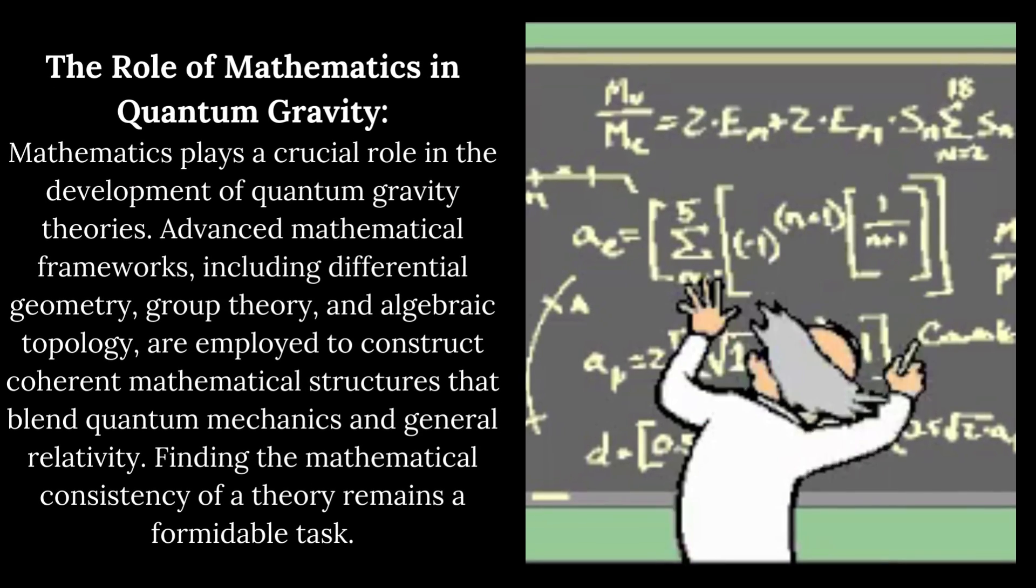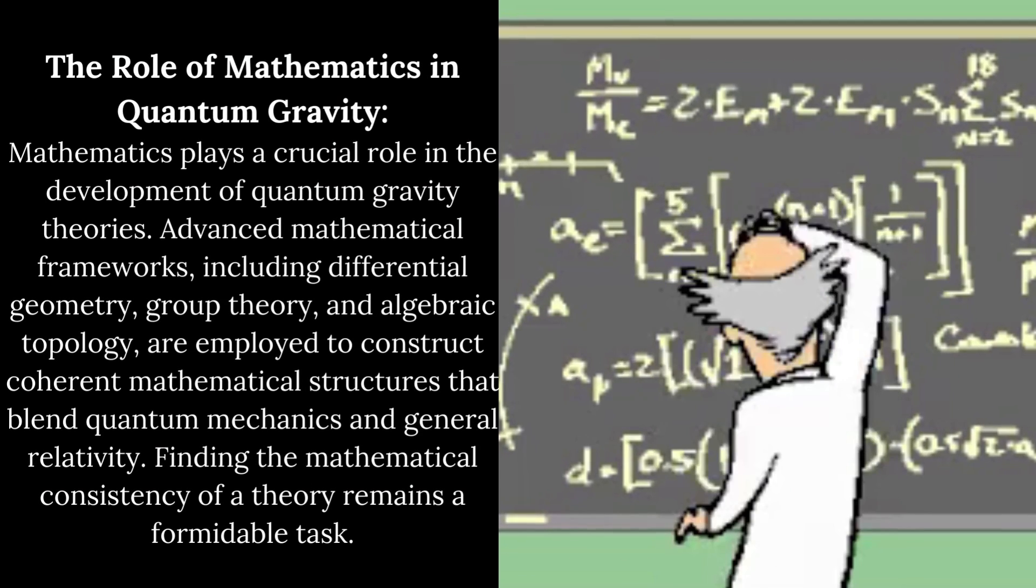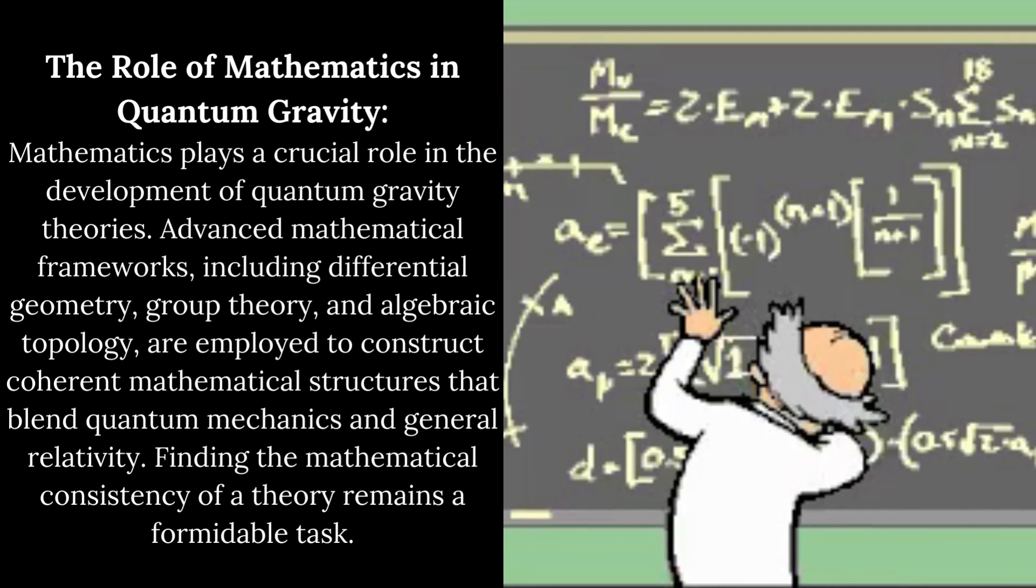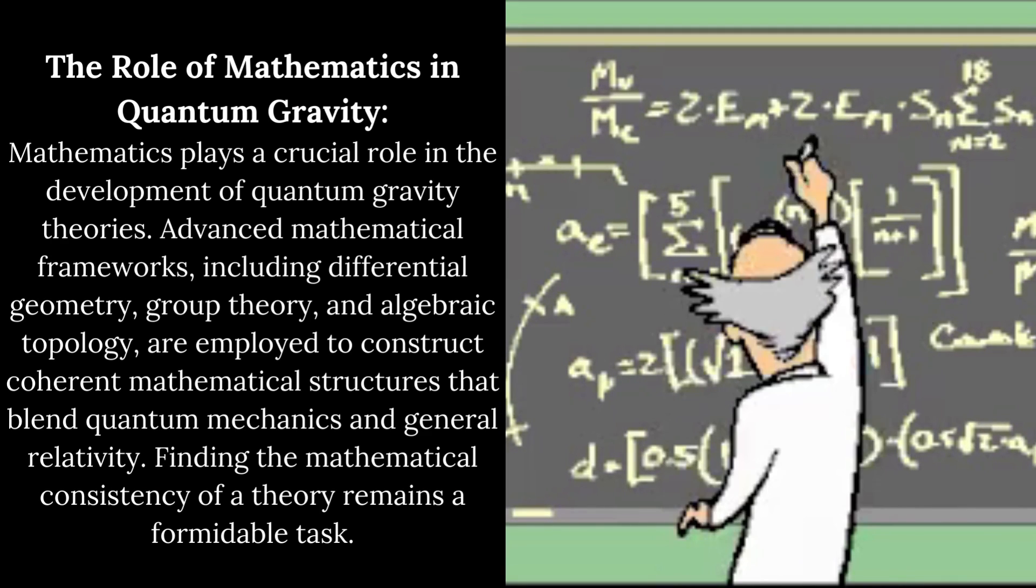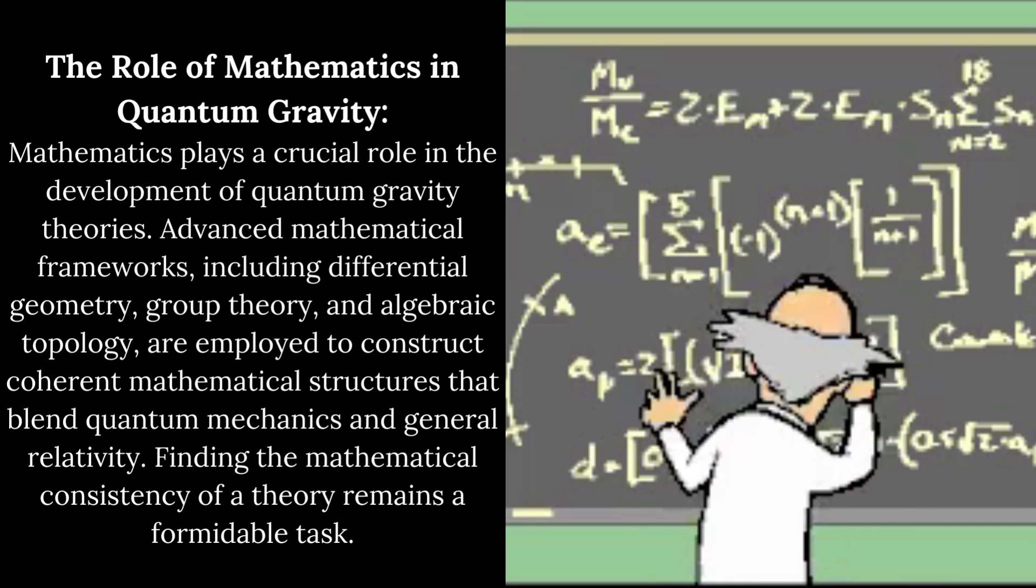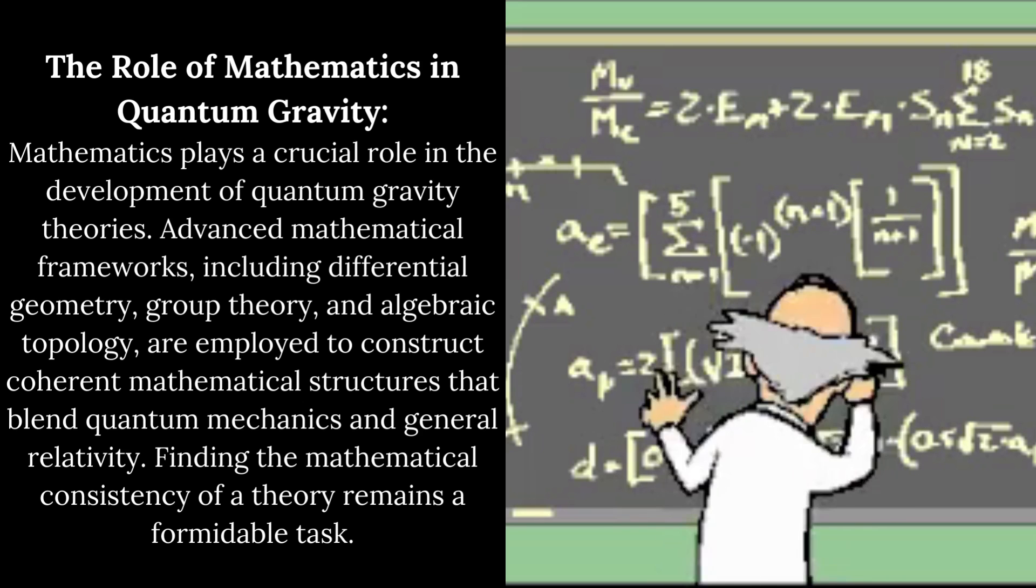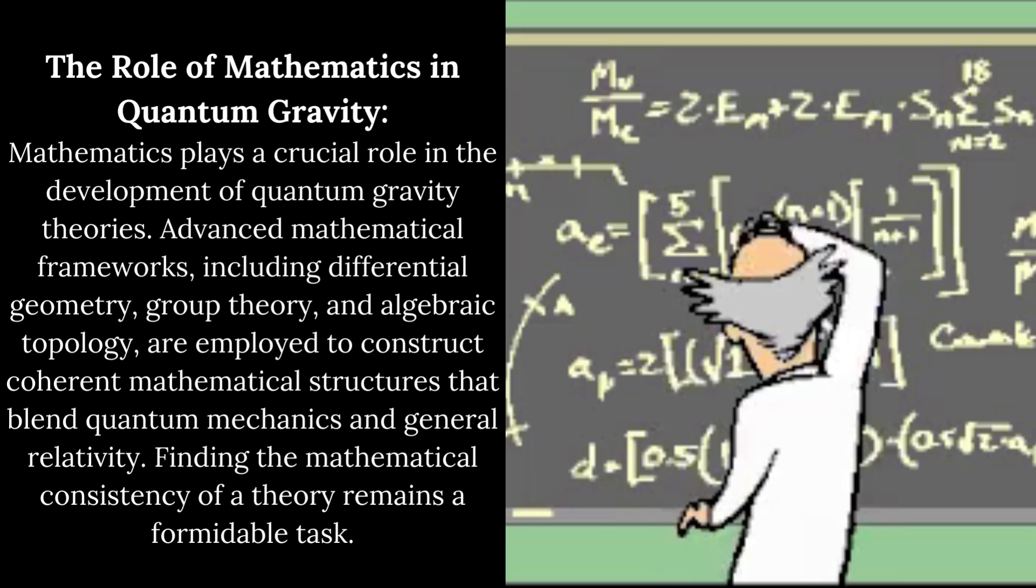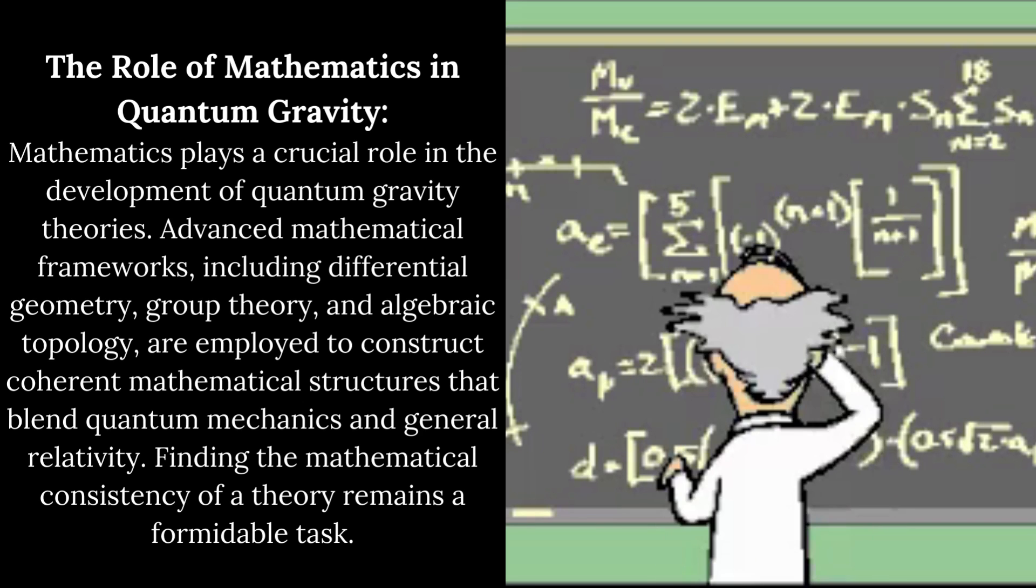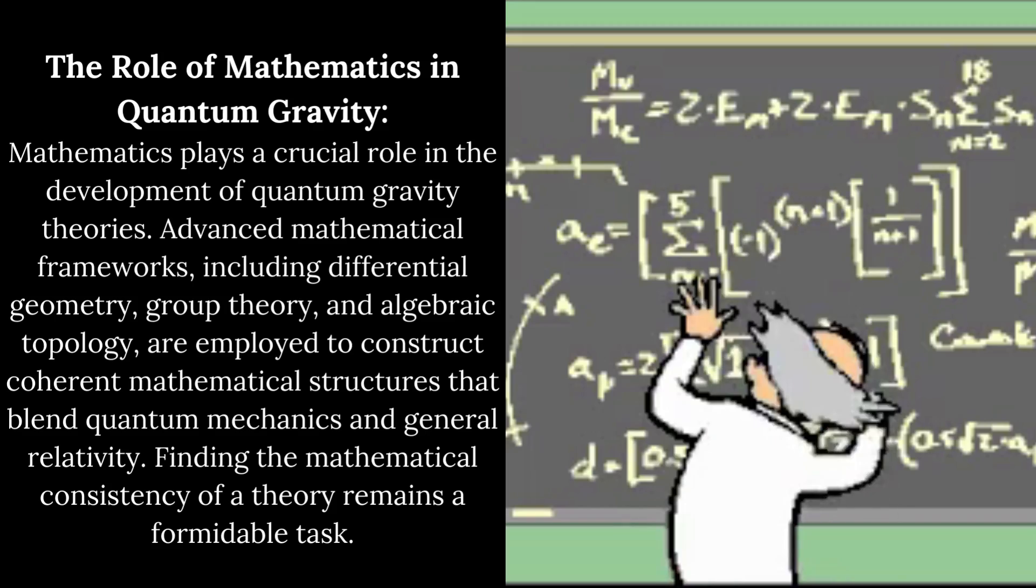The Role of Mathematics in Quantum Gravity. Mathematics plays a crucial role in the development of quantum gravity theories. Advanced mathematical frameworks, including differential geometry, group theory, and algebraic topology, are employed to construct coherent mathematical structures that blend quantum mechanics and general relativity. Finding the mathematical consistency of a theory remains a formidable task.